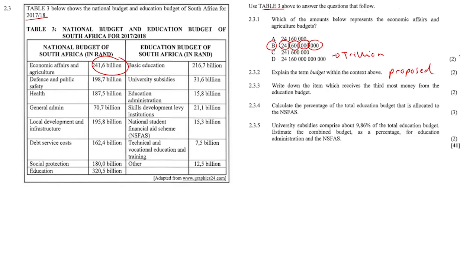Question 2.3.3: write down the item which receives the third most money from the education budget. The third most money goes to the skills development levy. The first two are basic education and then university subsidies, and then number three is skills development.